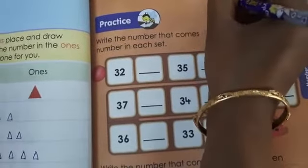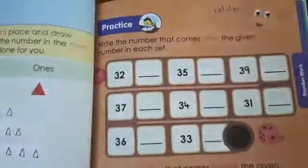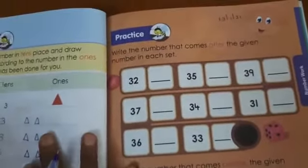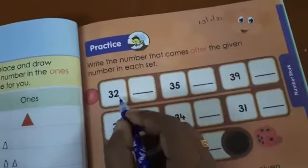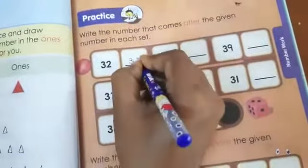30, 31. Then you have to write the numbers which comes after 32. 3, 3, 33.